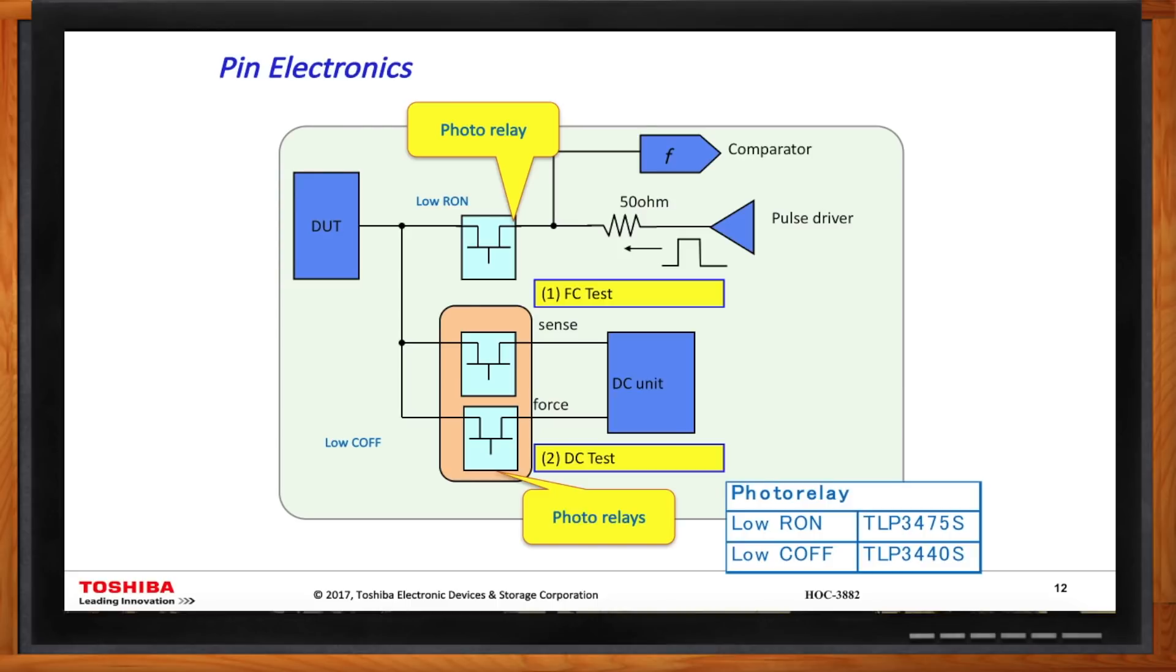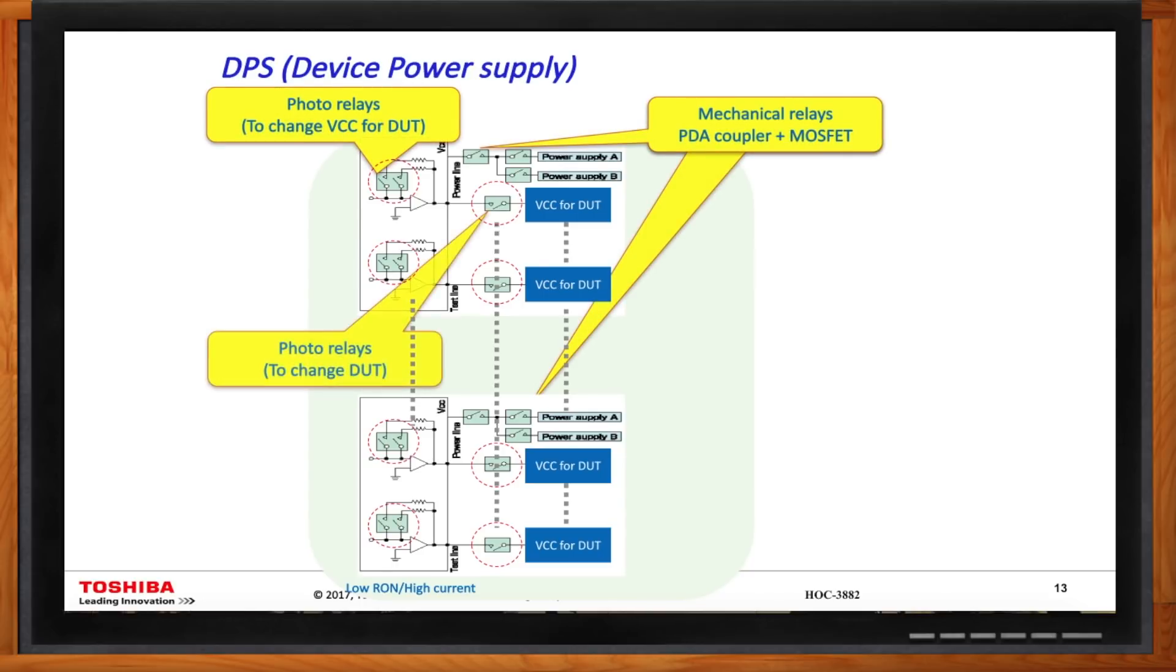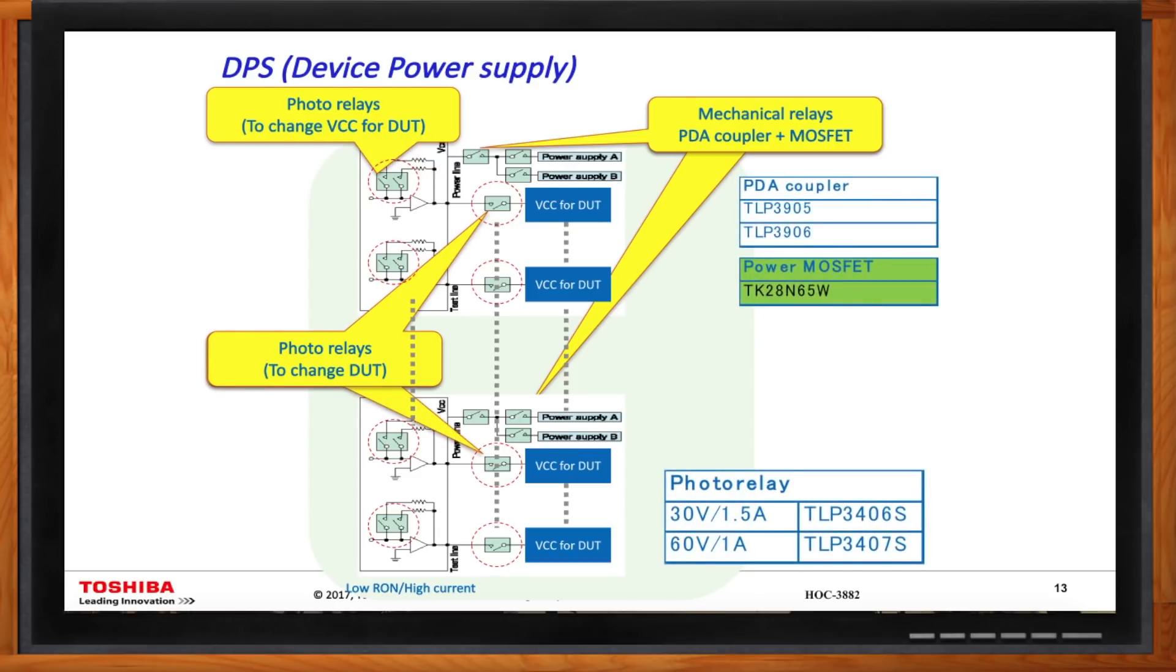Okay. And you mentioned relays are also used in the power supply side? Yes, definitely. There are many, many photorelays that need to be used on the DPS side. And in this particular slide, you can see where those area photorelays are needed. And we can supply you with our small package photorelays like the 3406S and the 3407S. In even area where you're currently maybe using mechanical relays, and the current is too high for our specific family, we can make suggestions by using what we call photovoteric coupler with external MOSFET. We'll talk more about that later on, closer to the end of this presentation.